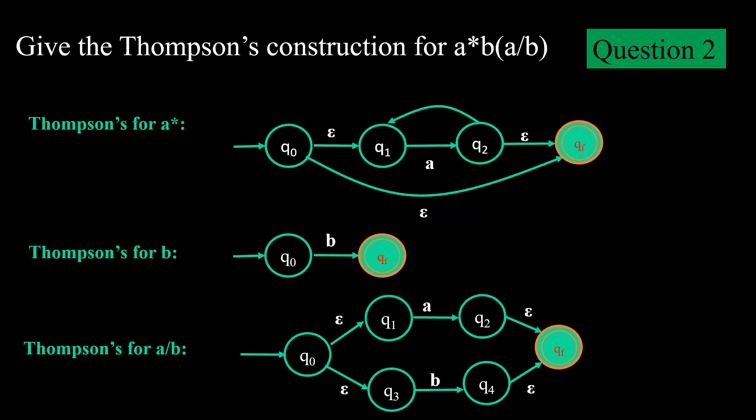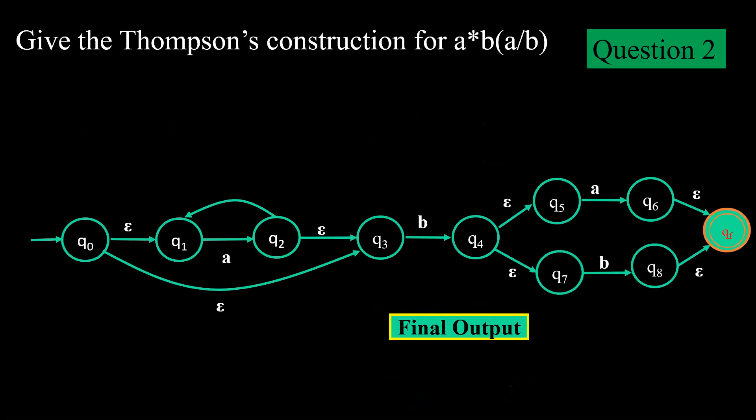Now let's take the second example. Here we have a*b(a|b). Just by seeing this expression we can easily say that it will have 8 epsilon, 4 for a*, 4 for OR. If I talk about a* as discussed in previous slides, my Thompson's construction will be this. For single b it is this and for a or b it is this. Now what I am supposed to do? I am just supposed to concatenate all three. So first a* then in concatenation with b and then in concatenation with a or b. 8 epsilon, 4 for a* that is this 1, 2, 3, 4. 4 for this 1, 2, 3, 4 and OR.